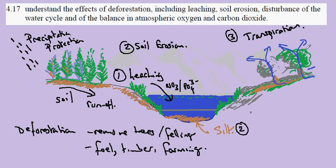This of course is transpiration. So if we remove the trees then we remove the transpiration and in that way we are disturbing the water cycle.